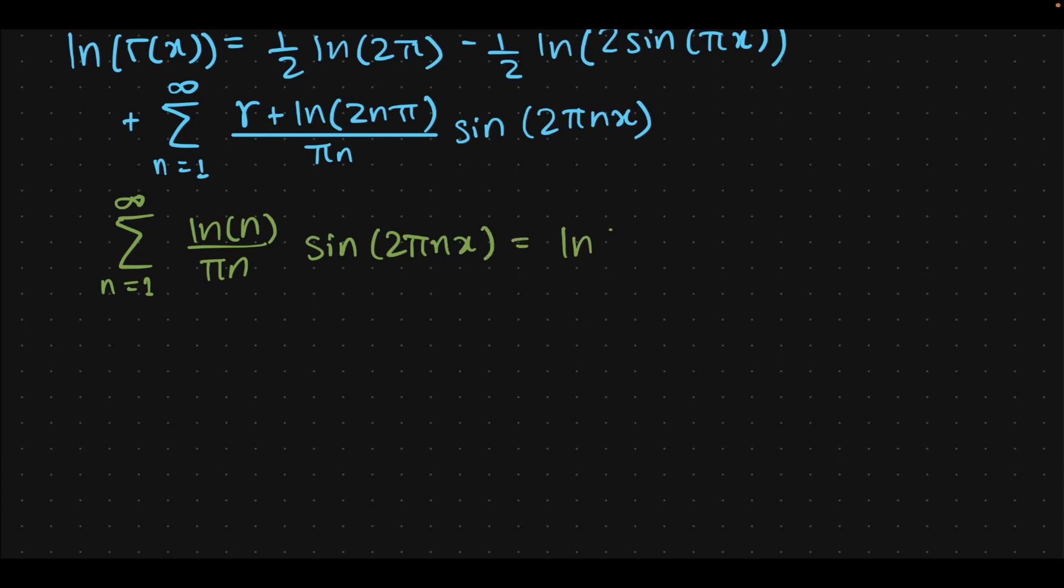So we have this and then sine along with it 2πnx, which can't do much with that. Equals natural log of gamma of x minus all the other terms by just doing algebra. So this is the constant coefficient term plus minus natural log of 2 sin πx, which will remain, minus sum from 1 to infinity Euler-Mascheroni sine 2πnx over πn.